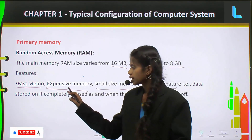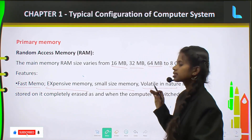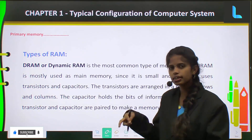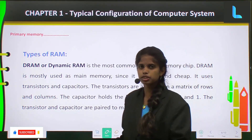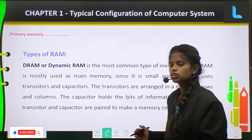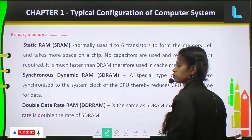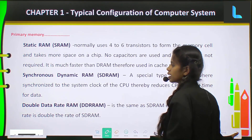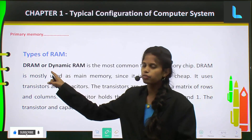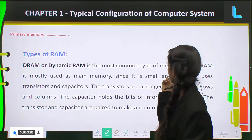The data that is stored in the RAM gets completely erased as and when the computer is switched off. In RAM also you have different types: Dynamic RAM, Static RAM, Synchronous Dynamic RAM, and Double Data Rate RAM. These are the different types of RAM.